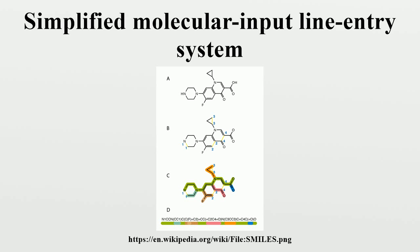Branches are described with parentheses, as in CCC(=O)O for propionic acid. Substituted rings can be written with the branching point in the ring, as illustrated by the SMILES for the 3- and 4-cyanoanisole isomers. Writing SMILES for substituted rings in this way can make them more human-readable.